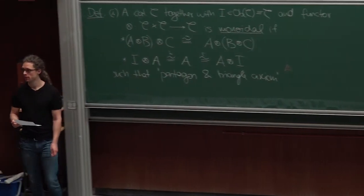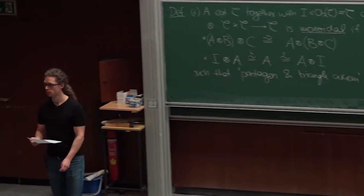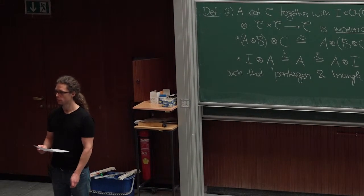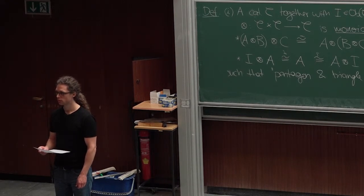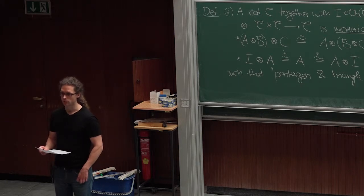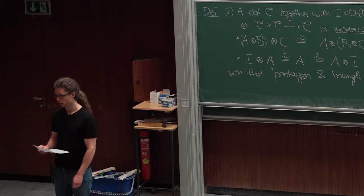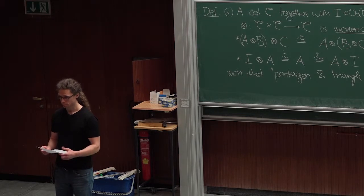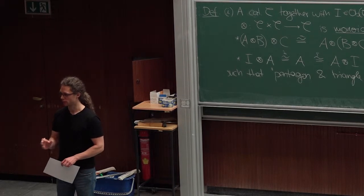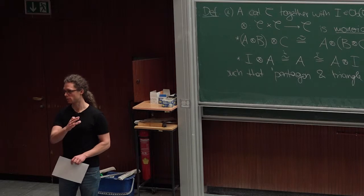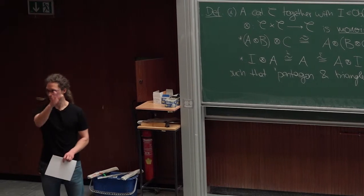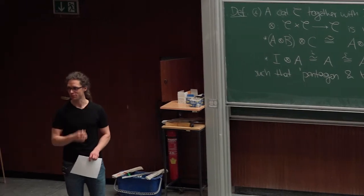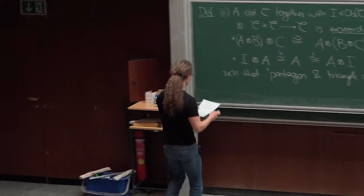You're asking whether there's more than one monoidal structure on the category of vector spaces. I will answer that question when I discuss the example in two minutes from now — it will be easier for most of us to follow the answer then. Please remind me if I forget.